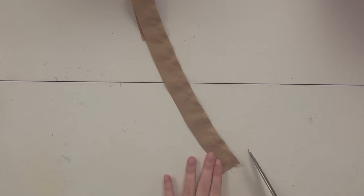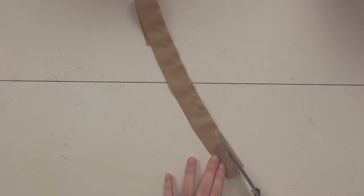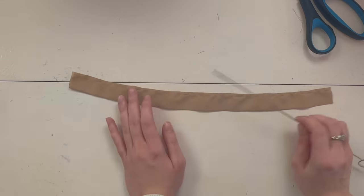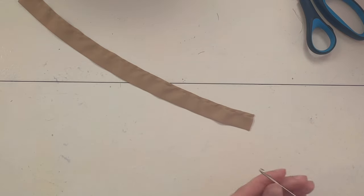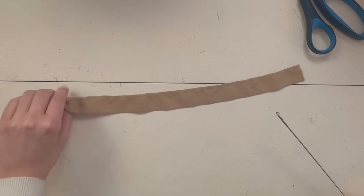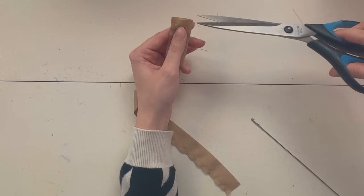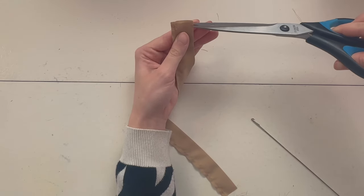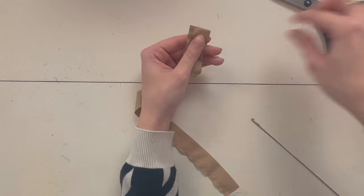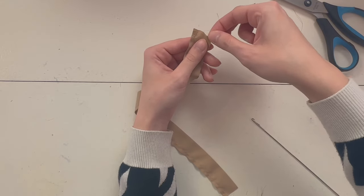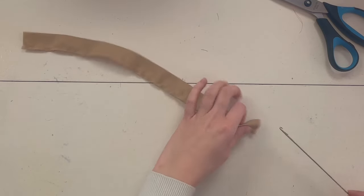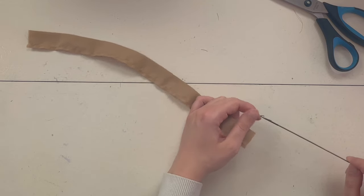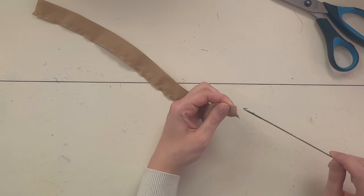Now you're going to take your strap and trim your seam allowance a little bit. Don't trim it too close to the edge, but trim it a little bit so that it's easier when we turn it right side out with the loop turner. Okay, let's start. So what I like to do actually is do a little hole at the top here.